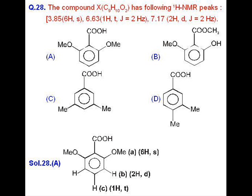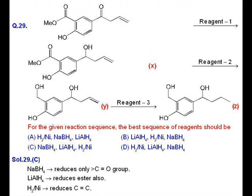Question number 28, the answer is A. This is a good NMR question. Here we are getting six hydrogen singlets, so two methyl groups should be identical, which is available in A as the two methoxy groups. After that, one hydrogen triplet is given, so it is the hydrogen of the para position. Then two hydrogen doublet is also given, which is possible only in option A.